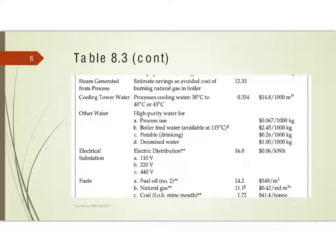We also have cooling tower water, which is cooled by air to 30 degrees C and returned from the process at 40 to 45 degrees C. Then we have water needed for other uses within the process: boiler feed water, which is going to be more expensive because we're adding chemicals to that water to keep it from destroying our boilers. We need drinking water and sometimes we're going to need deionized water. The cost of each of these is different as reflected in this table.